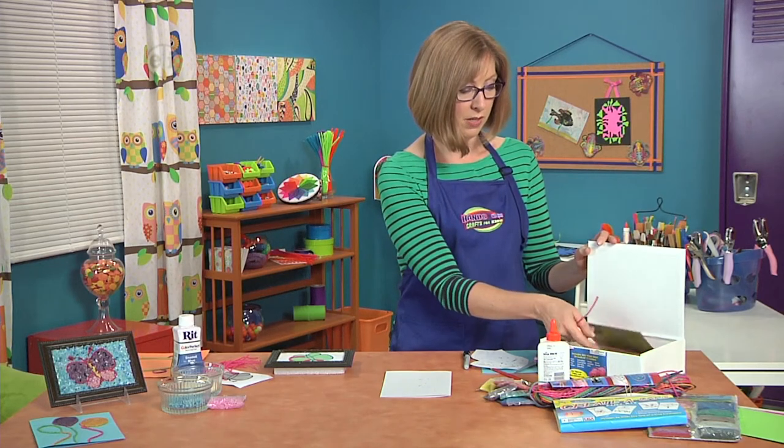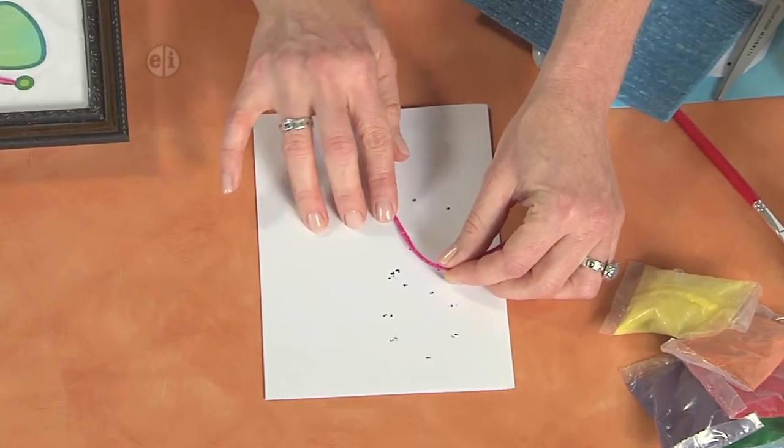Now you can follow that line around with your strings. I'll get a couple of different colors. These will stick right to the paper and warm up a little bit when you're using them. Just start at one end and trace all the way around.